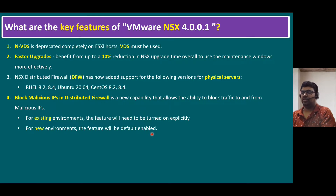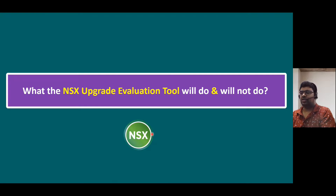In later sessions I will show the installation procedure and key architectural components of NSX 4.0. Some viewers have been sending emails asking questions based on a previous session about NSX V2T migration. During that session, we discussed three types of migrations: using the Migration Coordinator, the Coexist model, and Lift and Shift. Viewers are also asking about one specific tool — as per VMware, it recommends using the NSX Upgrade Evaluation Tool.